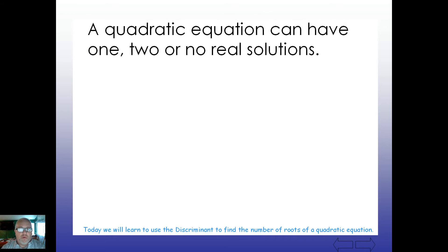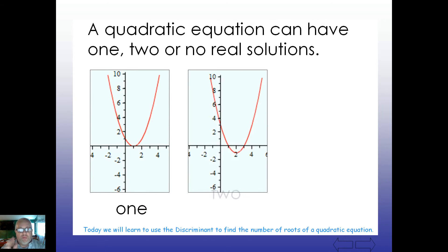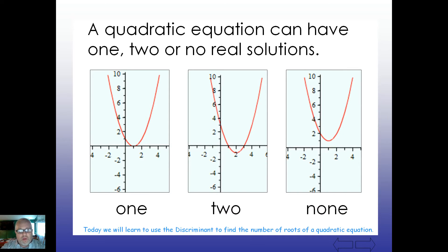Now, a quadratic equation can have one, two, or actually no real solutions. Remember that if this graph touches the x-axis at one point, it has one solution. If it crosses through it, either up or down, it has two, and it can hover above or go below, which would give us zero or no solutions here.